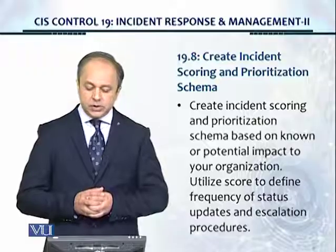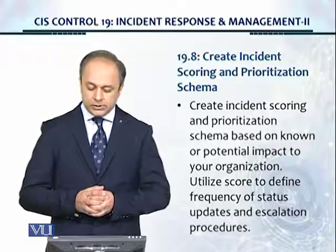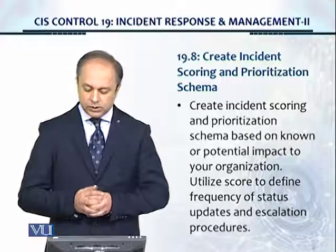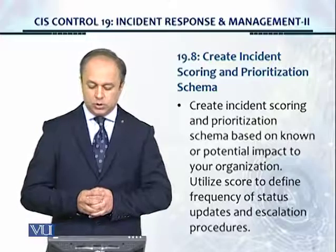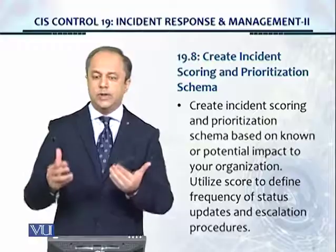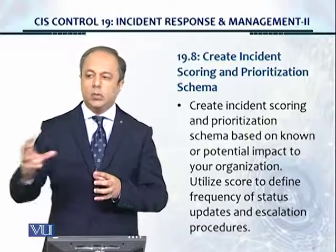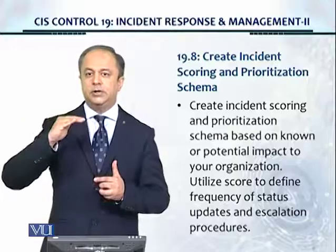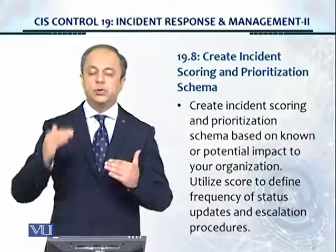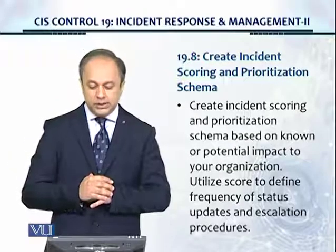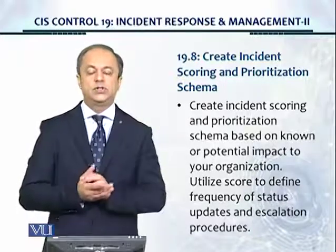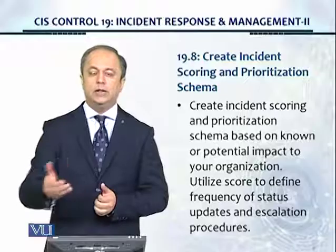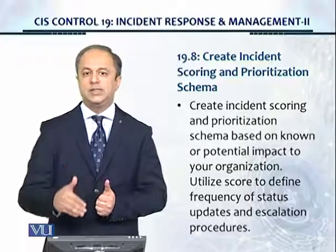Control 19.8: Create Incident Scoring and Prioritization Schema. Create an incident scoring and prioritization schema based on known or potential impact to your organization, and utilize the score to define frequency of status updates and escalation procedures. When an incident happens, we need to triage and evaluate what type of incident it is — is it a category one or category five incident? We need to determine the severity and criticality, and score it accordingly to help in triage — evaluating the seriousness of the incident.